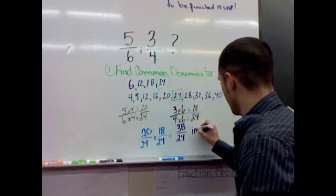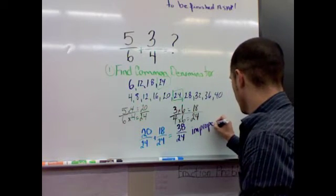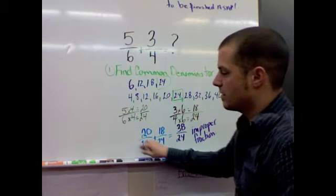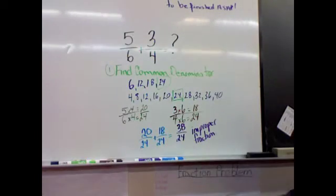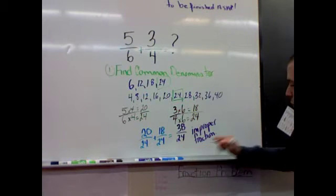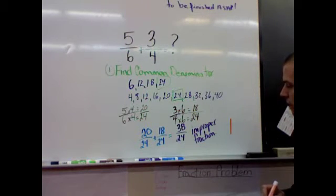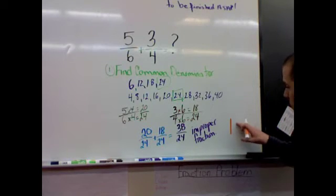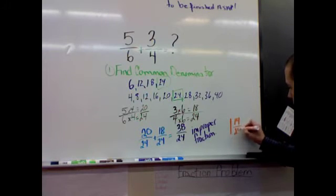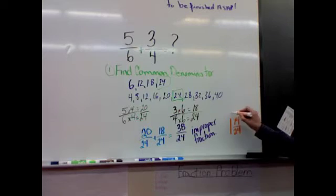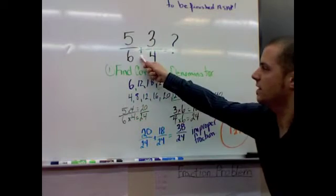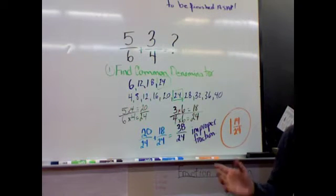This is an improper fraction. To make our answer complete, to make it a proper answer, we want to turn this improper fraction into a mixed number. So 24 out of 24 would be one whole, right? So 24 out of 24. And then the remaining 14 over 24. So the answer is 1 and 14 over 24. That is the result of this addition equation. So that is adding fractions.